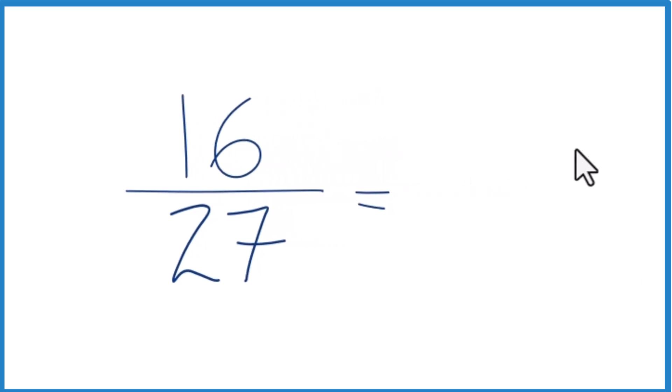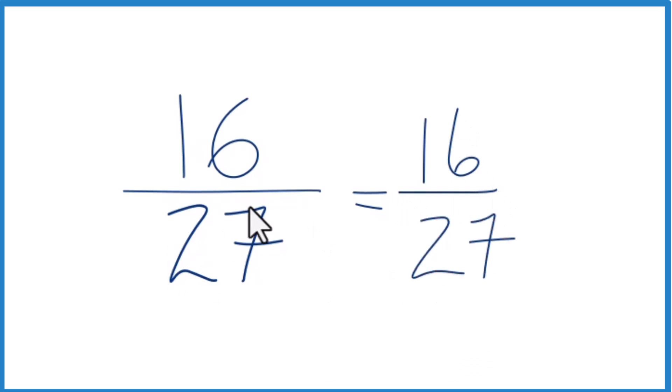If we divide 16 by 1, we get 16. 27 divided by 1 is 27. And we're right back where we started.